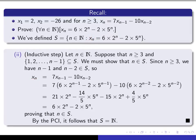I'm going to start with x_n and prove it equals the closed-form expression. I write down x_n and apply the formal recurrence definition: x_n = 7x_{n-1} minus 10x_{n-2}. Now since n-1 lies in S, I know the closed-form formula holds when n is replaced by n-1, so x_{n-1} equals the formula evaluated at n-1. Similarly, since n-2 lies in S, x_{n-2} equals the formula evaluated at n-2. Now it's simply a matter of verifying that this gives the desired result.